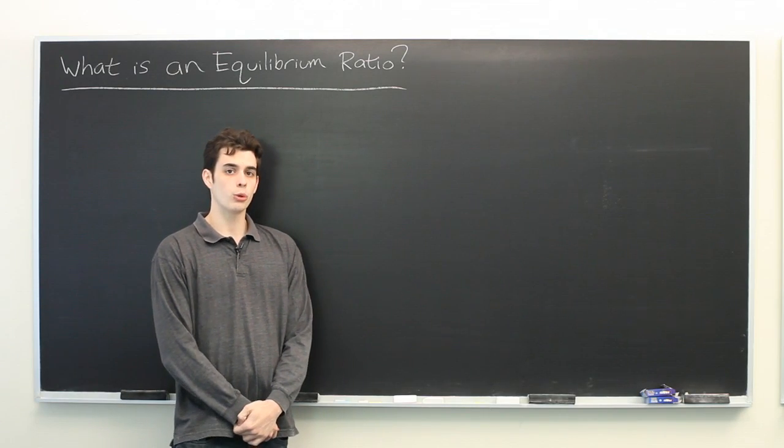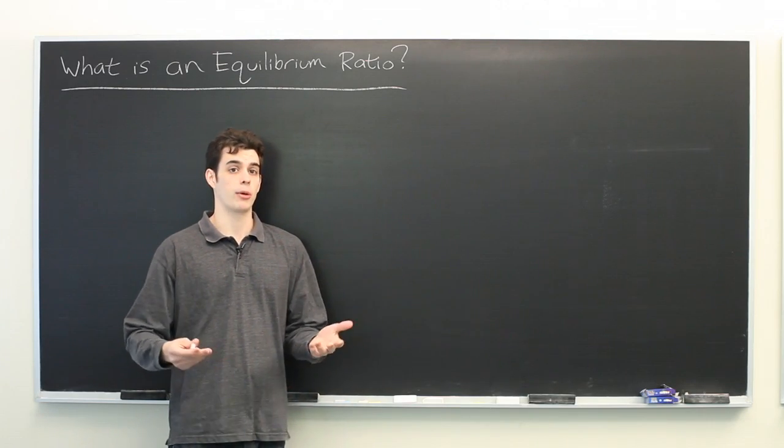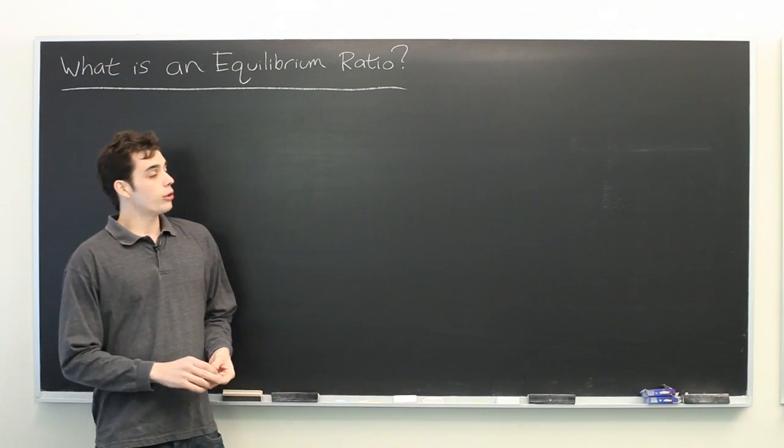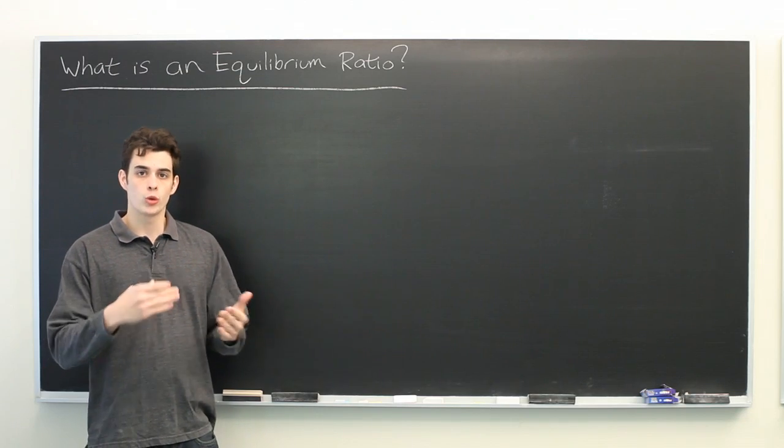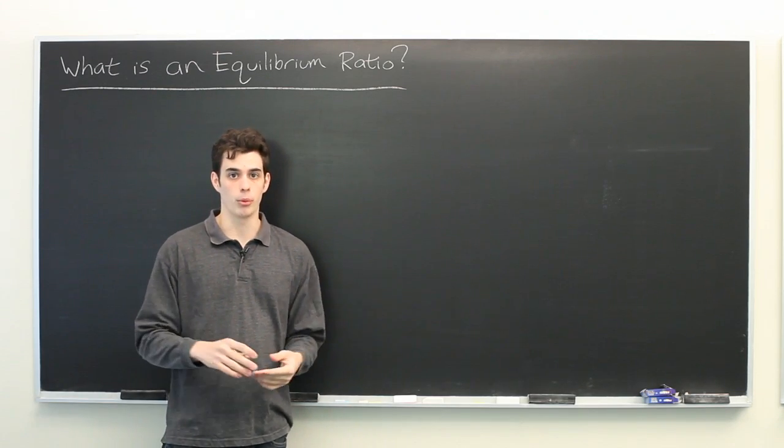So an equilibrium ratio, if you've got some system, it could be a physical system or a chemical system, equilibrium ratio is a ratio between two or more quantities such that the system will reach an equilibrium point.